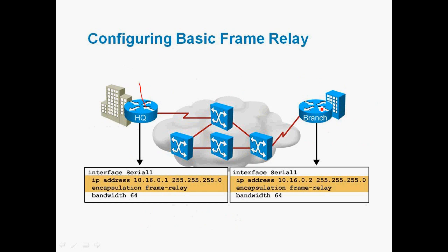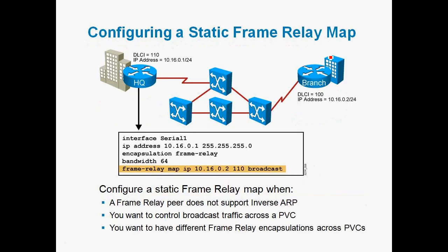Configuring basic frame relay: here we have a headquarters router and a branch router connected through a frame relay cloud. First, go to the serial interface — for example, interface serial 1 — and give the command 'encapsulation frame-relay'. This changes the WAN protocol from HDLC to frame relay. The same configuration is applied to the branch office router as well. Then configure the bandwidth, for example bandwidth 64.